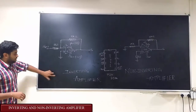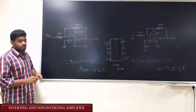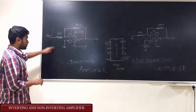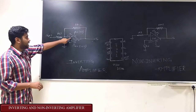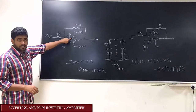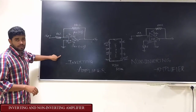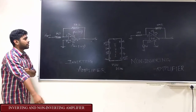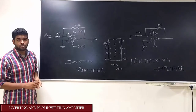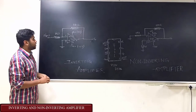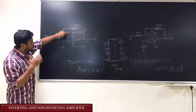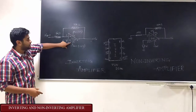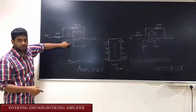This is the inverting amplifier. The input is applied at the inverting terminal and the non-inverting terminal is grounded. This device requires a dual power supply, so 12V is applied at pin 7 and minus 12V is applied at pin 4.